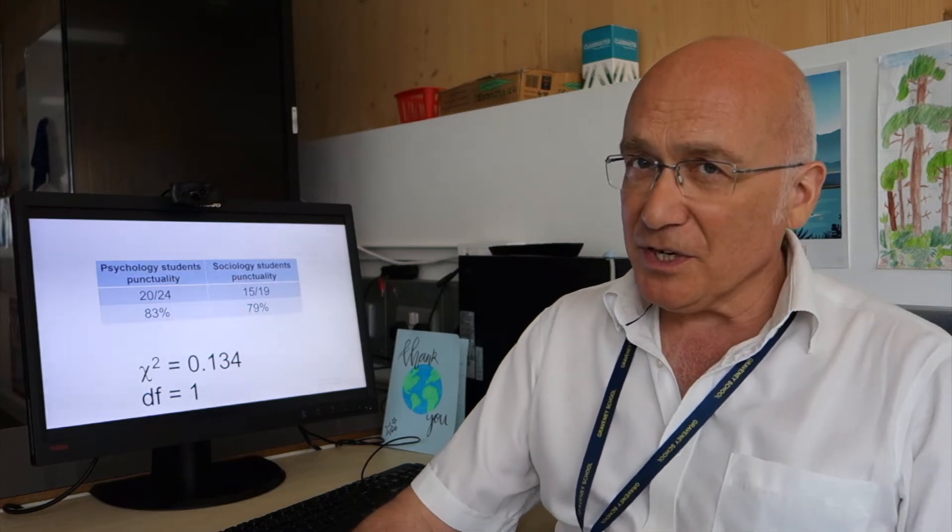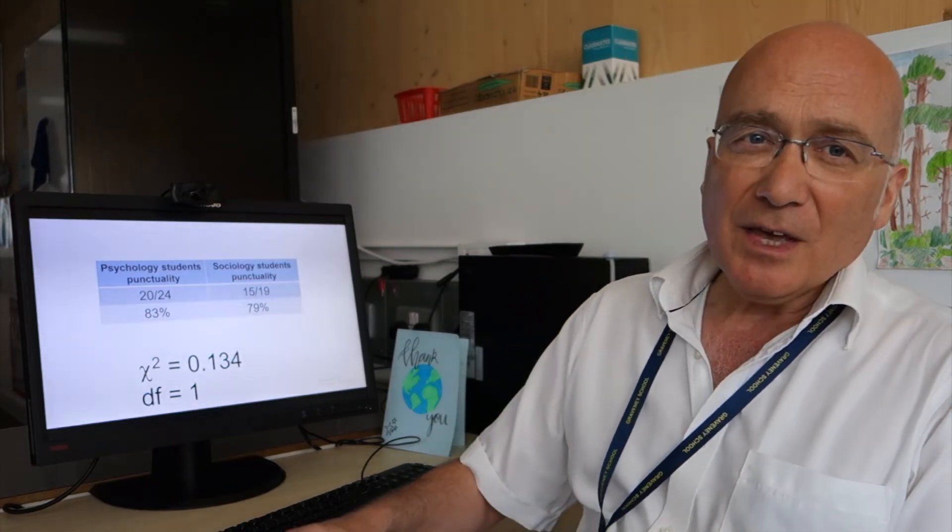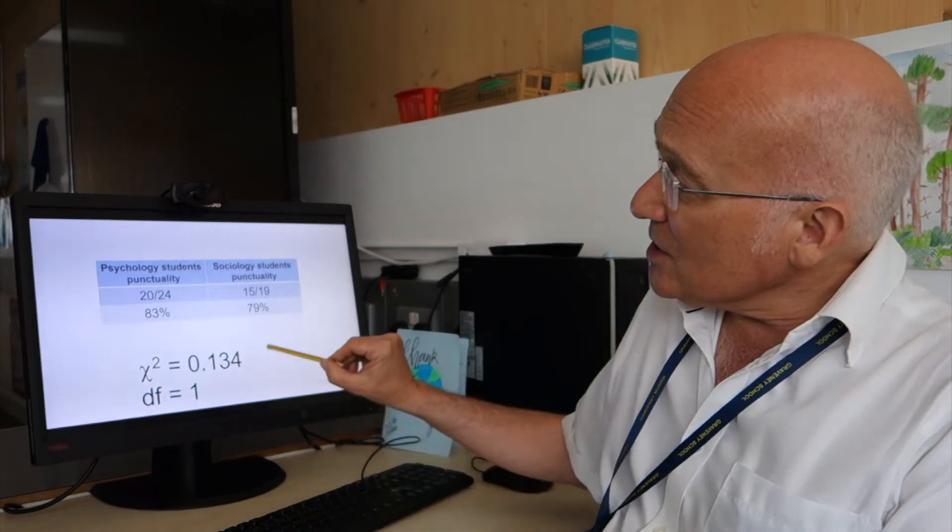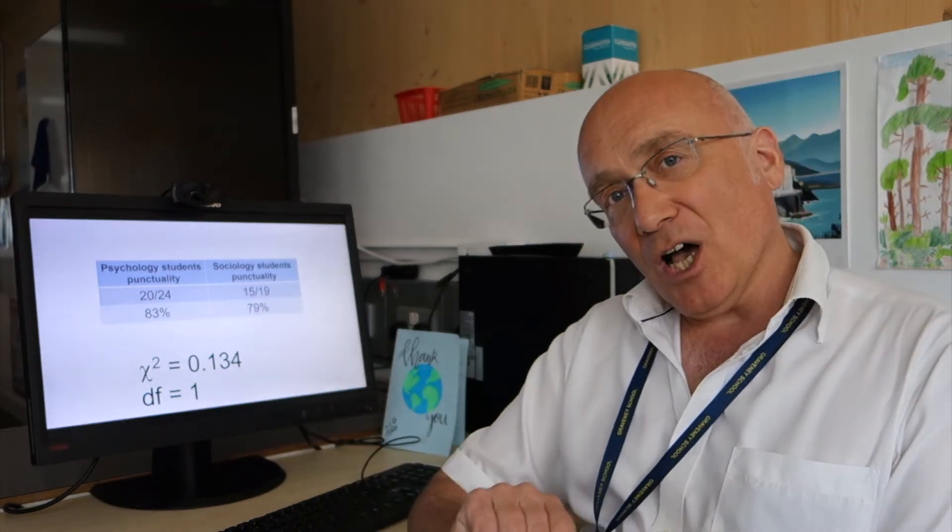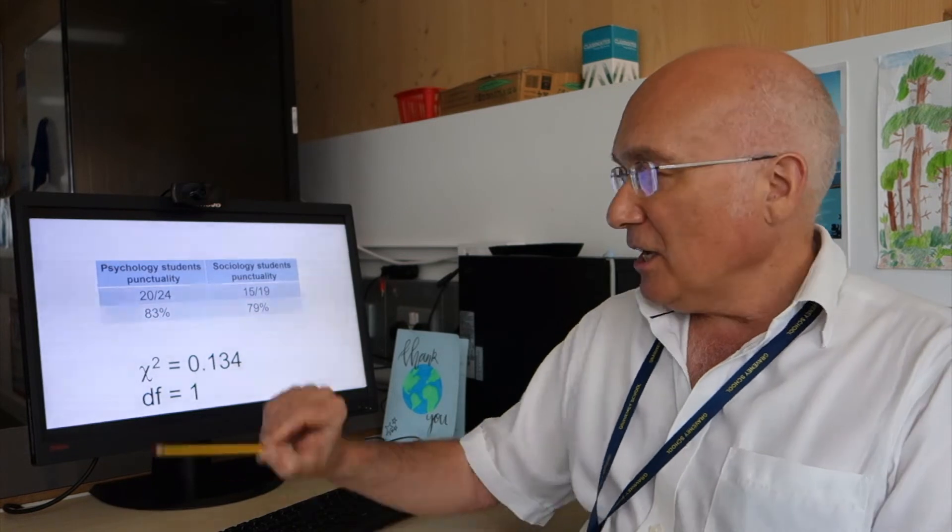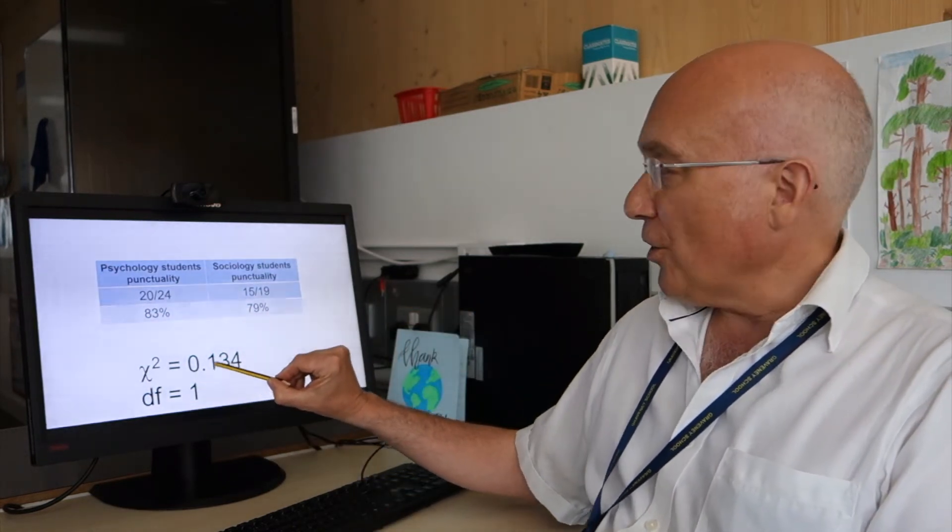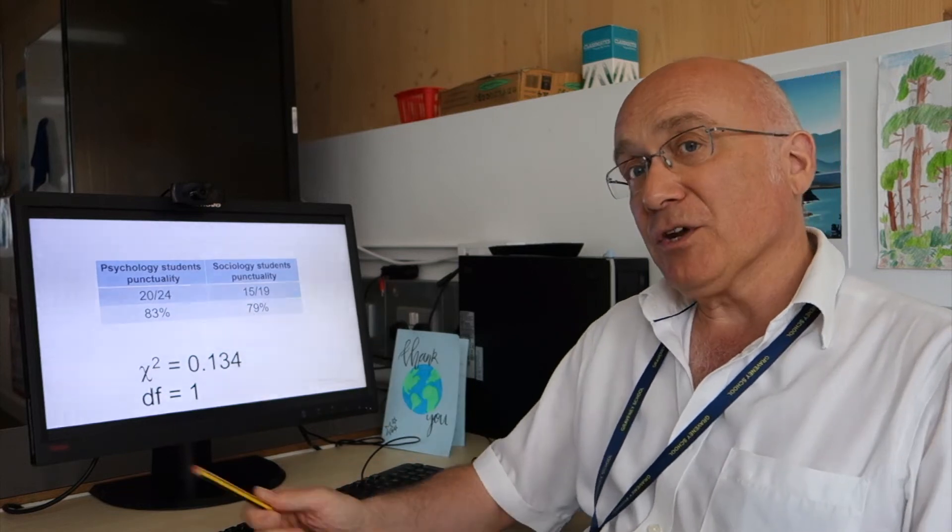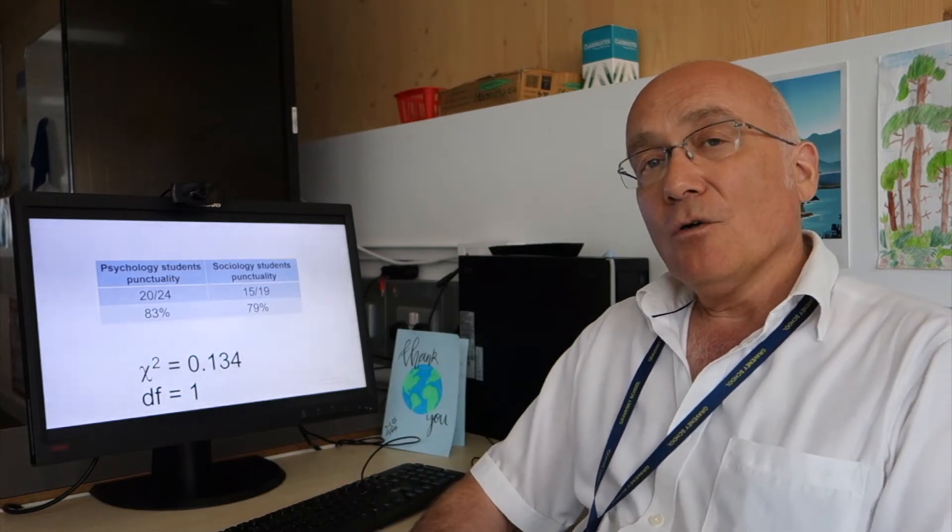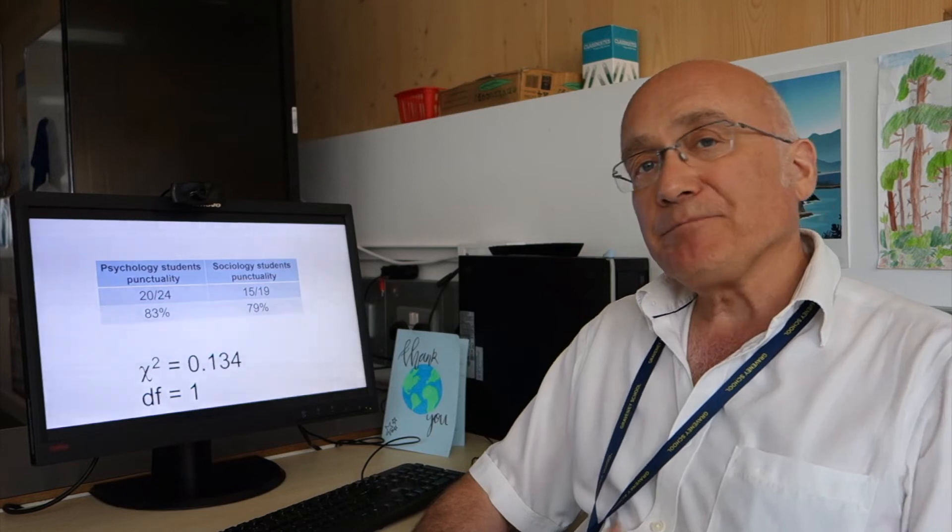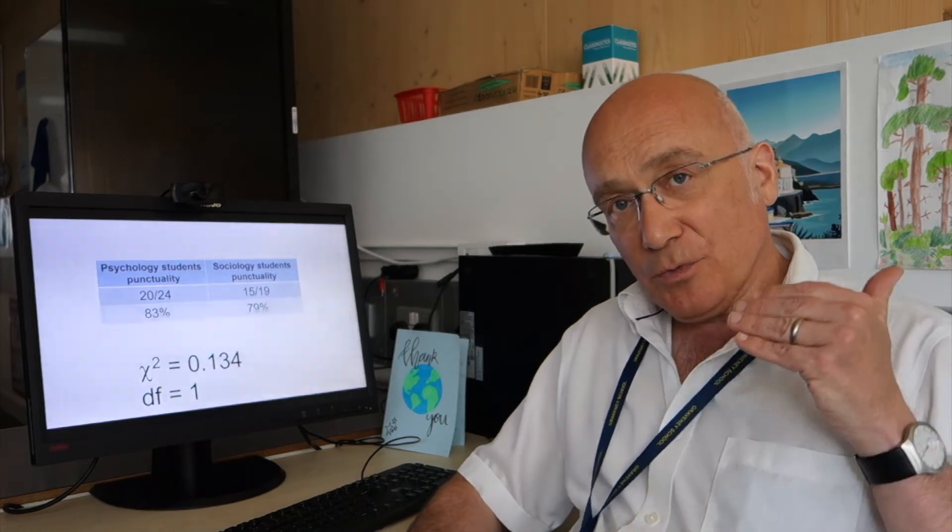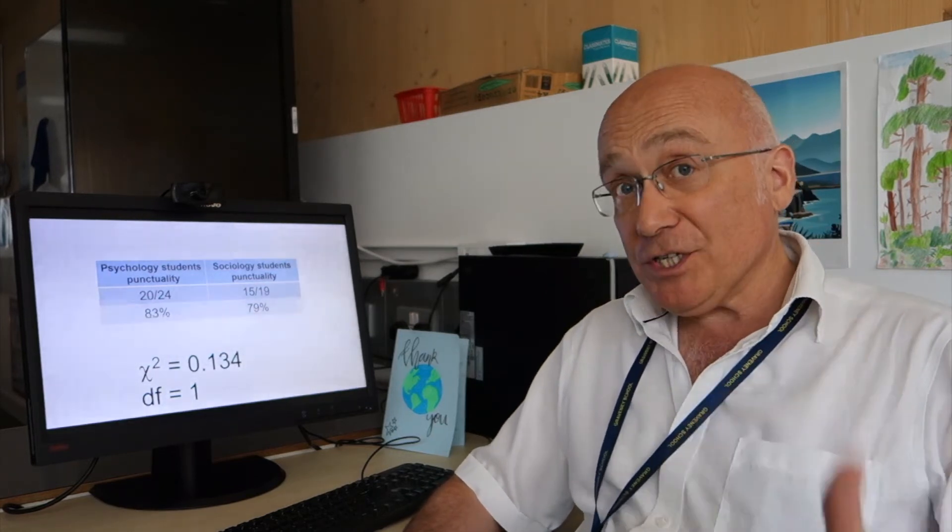Anyway, you're not going to have to do it in the exam, so let's not worry about it. In the exam, it will tell you the outcome of the statistical calculation. In other words, it will give you that chi-squared is 0.134 and that the degrees of freedom are 1. Right, so how do we proceed from there? What we do is we look it up, look up the critical value on a statistical table like this one from the dog book.